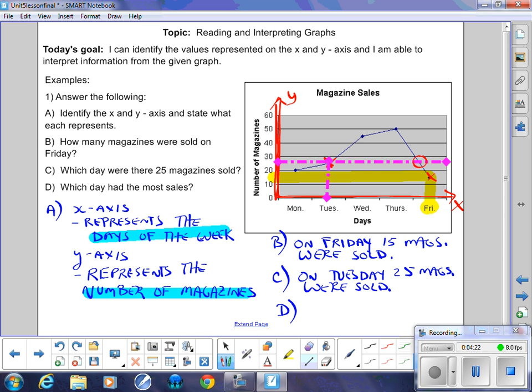D part, which day had the most sales? So that means you're looking for the highest coordinate. I've located the highest coordinate. That represents the most magazine sales. Looking down, I see that it occurred on Thursday. So on Thursday, the most magazines were sold. There we go.